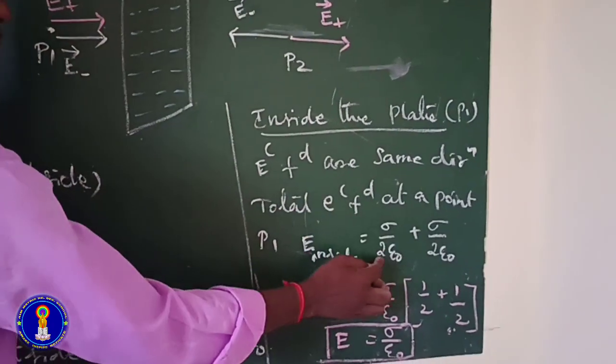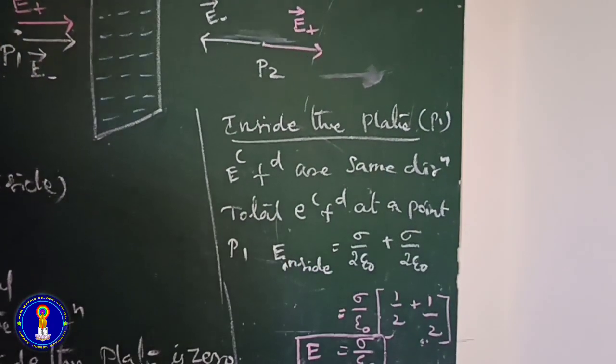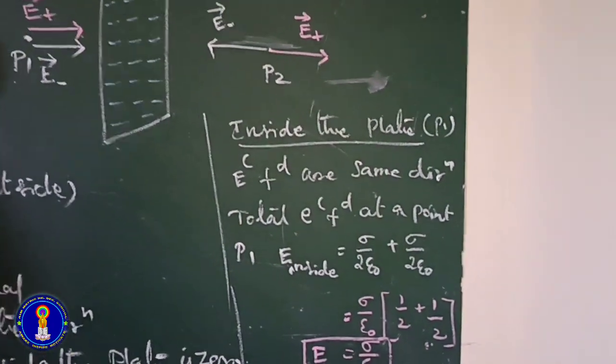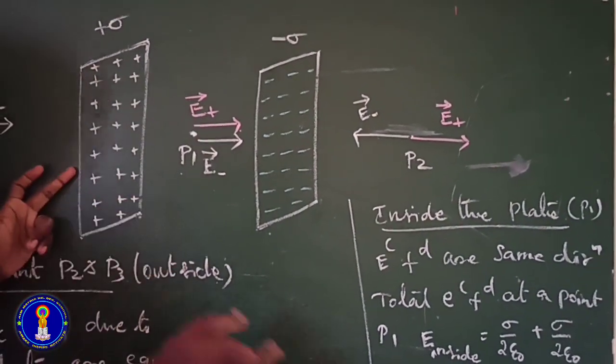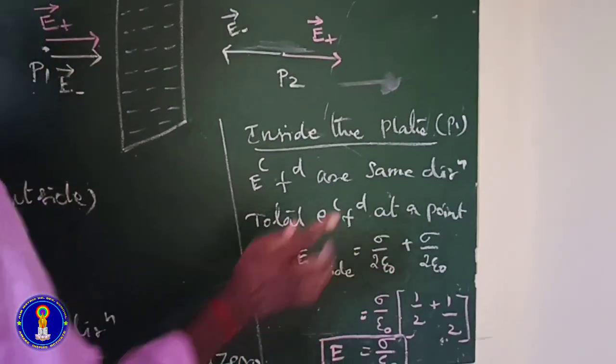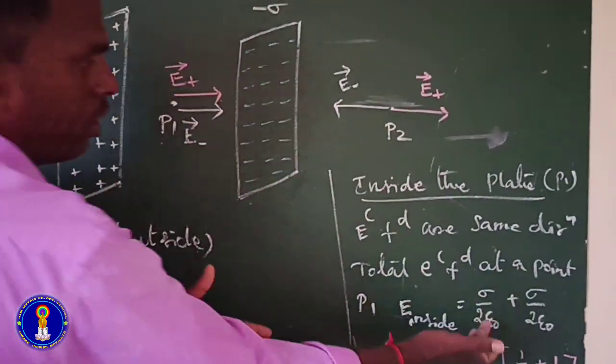sigma by 2 epsilon naught plus sigma by 2 epsilon naught. We already know electric field at a point due to infinitely charged plane sheet is sigma by 2 epsilon naught.